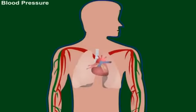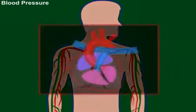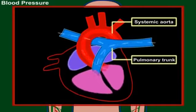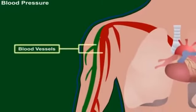When the heart pumps blood into the systemic aorta or into the pulmonary trunk, the blood flows with pressure in the blood vessels.